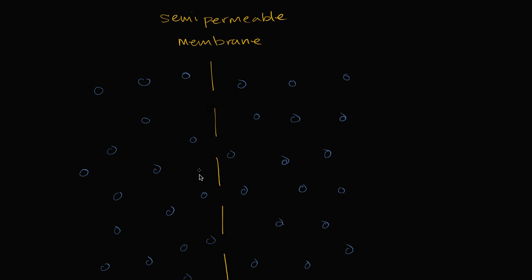Let's say that I had two compartments of water and they're separated by a semi-permeable membrane. What do I mean by semi-permeable membrane? That means they allow some things to go through and not other things. This semi-permeable membrane does allow water molecules to pass, and in a few seconds we'll talk about what it does not allow to pass, which makes it semi-permeable.